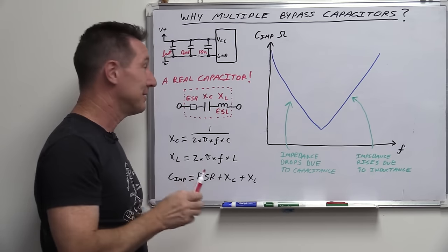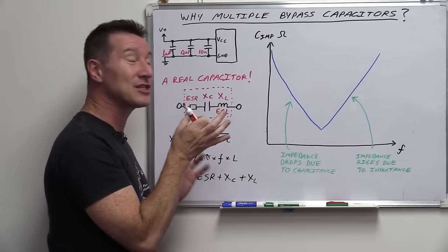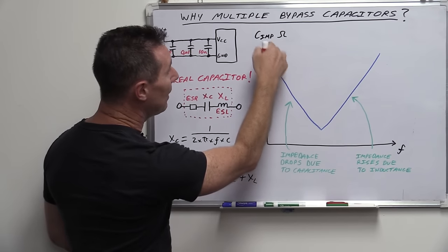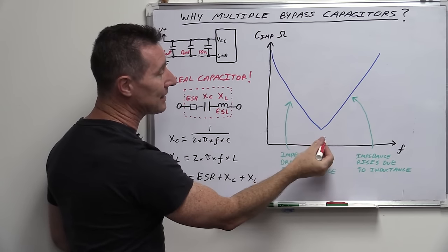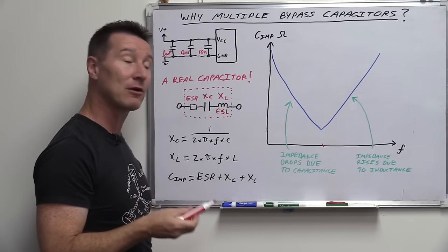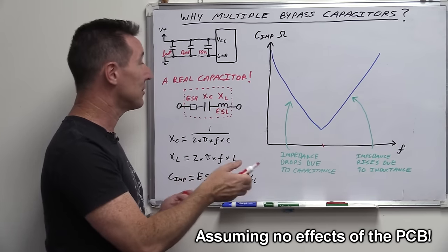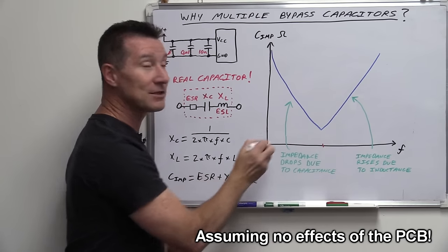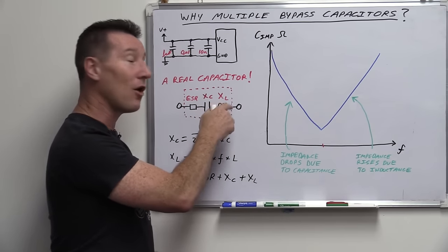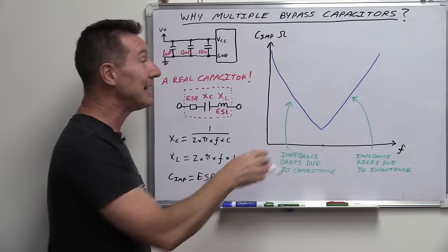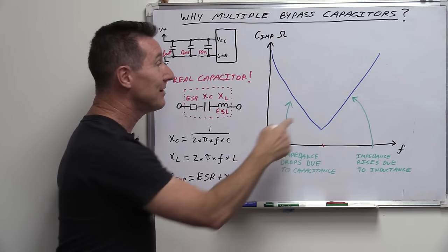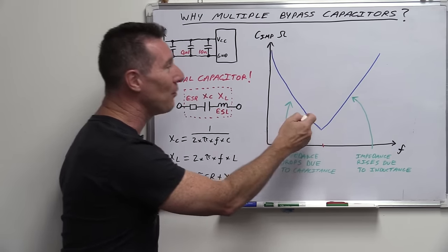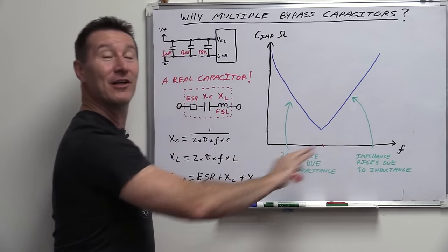Without inductance, the line would just slope down as frequency increases, following the capacitive reactance. But that small internal inductor — possibly just picohenries — starts to matter at a particular frequency. That is the resonant frequency of the RLC circuit, where capacitive reactance and inductive reactance are equal. Above that resonant point, the inductive reactance dominates instead of the capacitive reactance, and the impedance starts to rise back up. That's very undesirable — you don't want the impedance rising at higher frequencies. You want it to stay low.